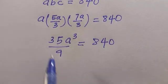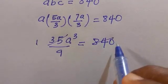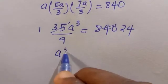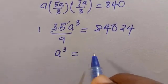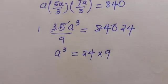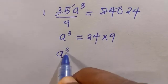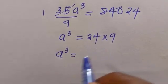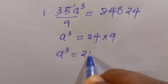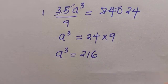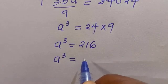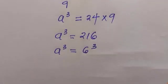You know from here, if you divide 35 by 840 we're going to have 24. And when we cross multiply we have a³ equals 24 multiplied by 9. And a³ equals 24 multiplied by 9, that is 216. And 216 in exponent form is 6 raised to the power of 3.